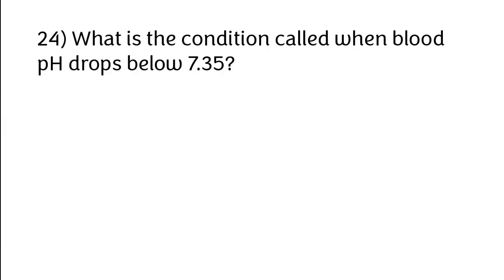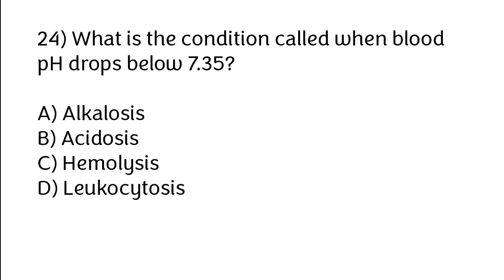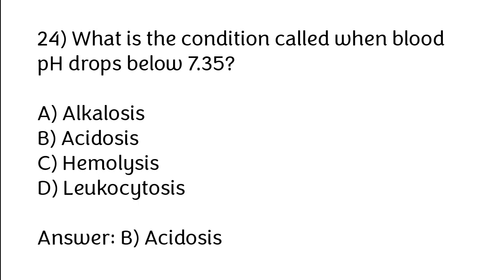What is the condition called when blood pH drops below 7.35? Options: Alkalosis, acidosis, hemolysis, leukocytosis. The correct answer is Option B: Acidosis.